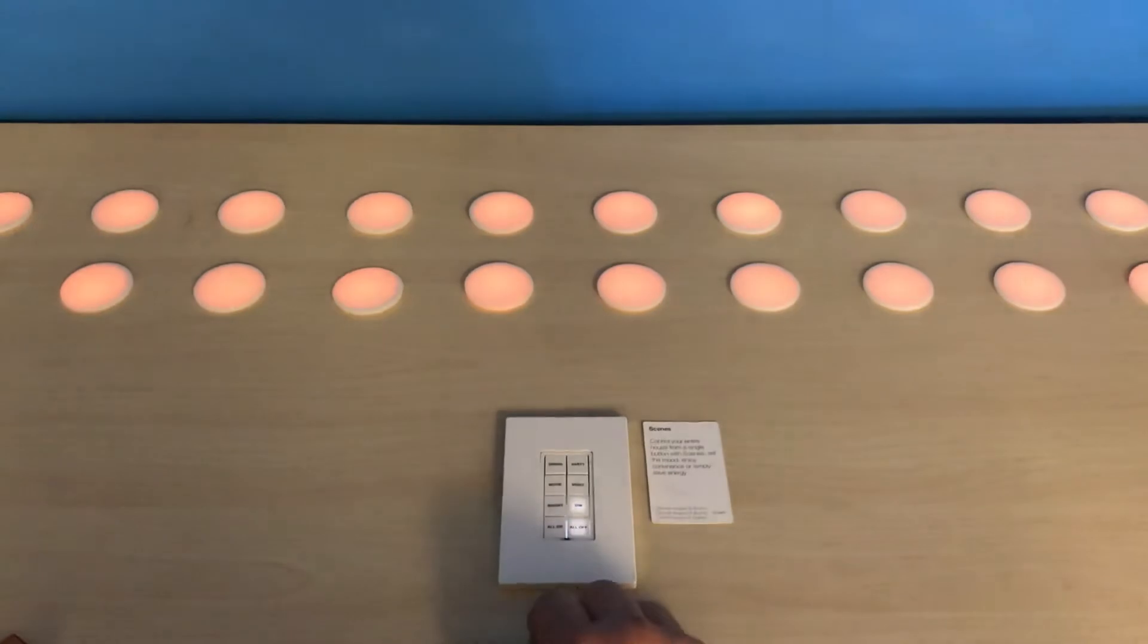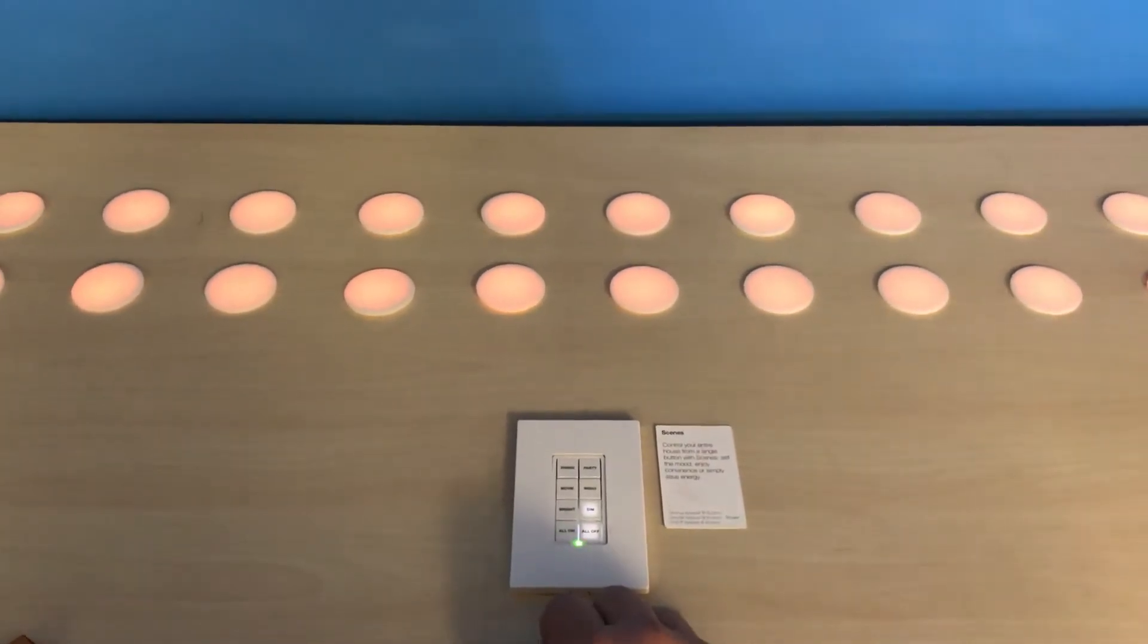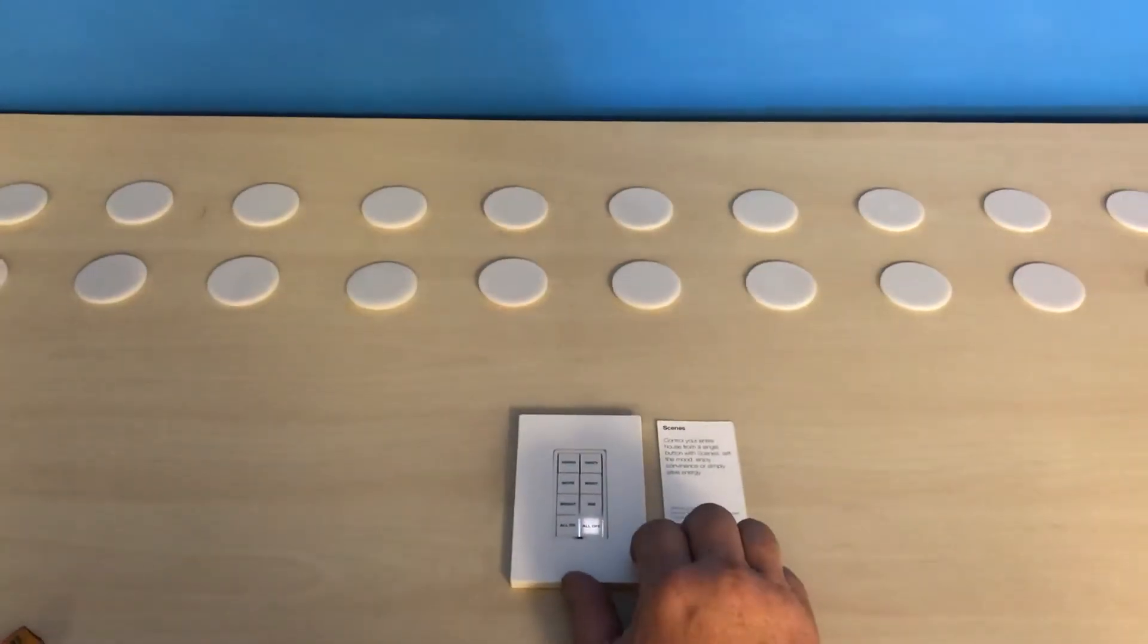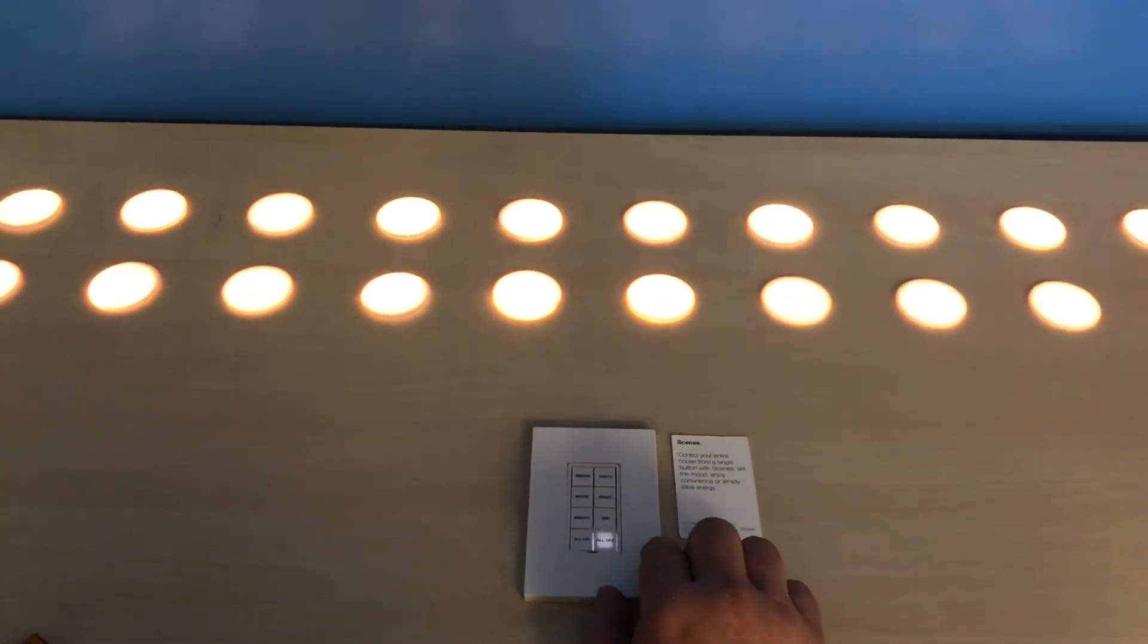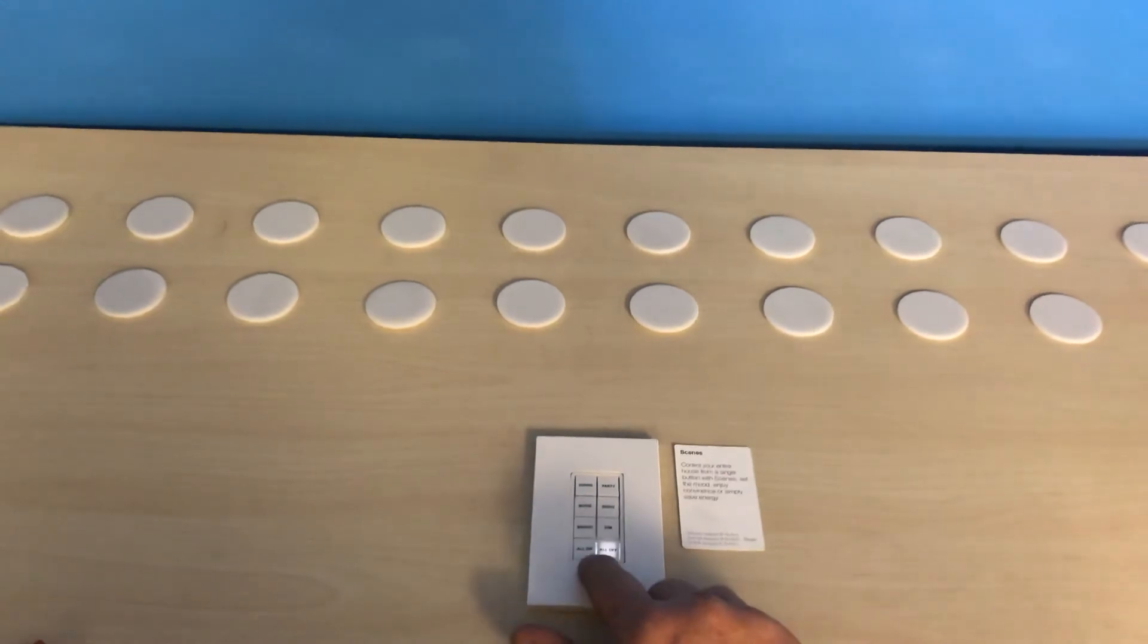And there's my dim scene, and then I can also push it again and it goes off. There's all on, and there's all off, and the buttons will track accordingly based on the last button that I push.